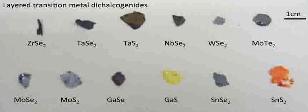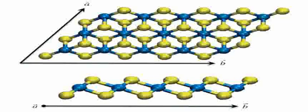These compounds are known for their unique electronic properties, which arise from their layered structure, where individual layers are held together by weak van der Waals forces. This structure allows for easy exfoliation into thin layers or even single-layer materials, akin to graphene.